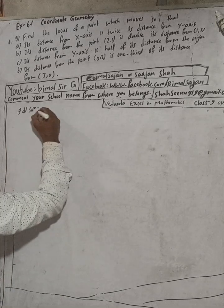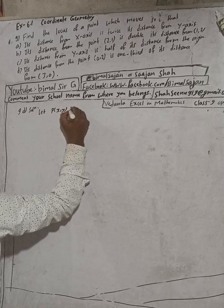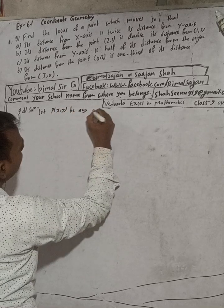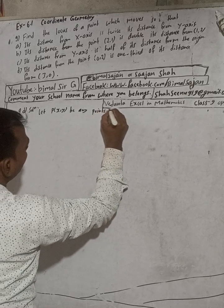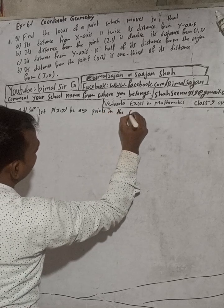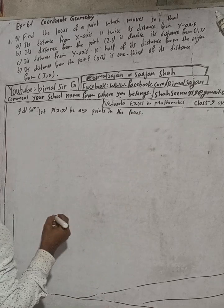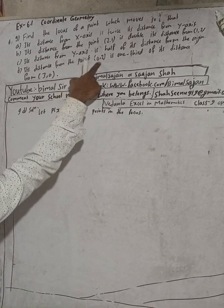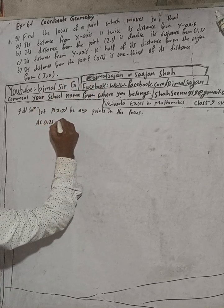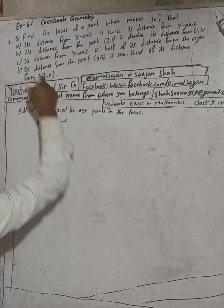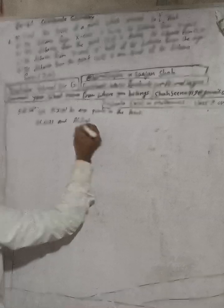Let P(x, y) be any point in the locus. Here A is (0, 2) and B is (3, 0) — these are two fixed points.